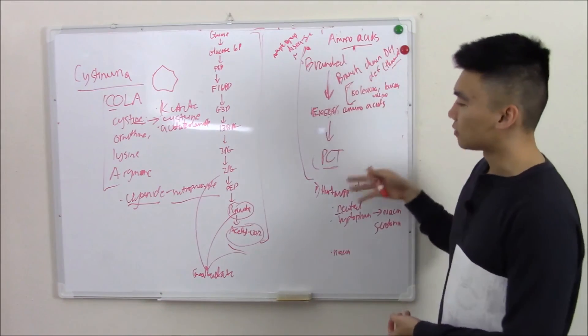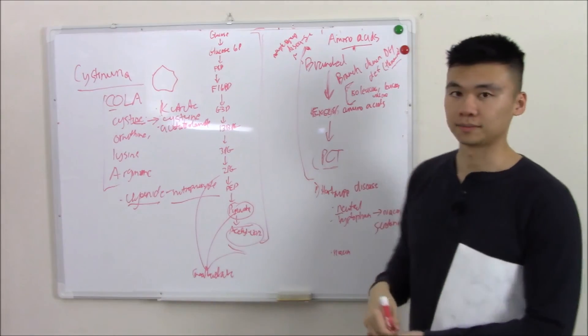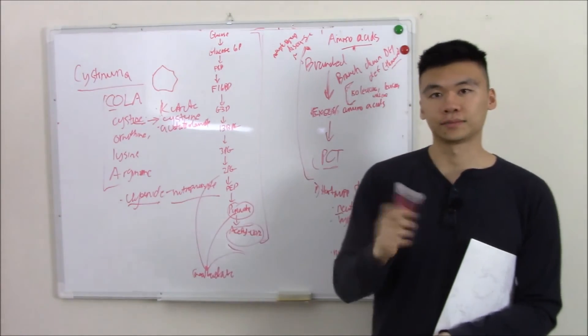So we talked about how amino acids fit into our glycolysis backbone. We talked about some ways where it can go wrong. That does it for this video. See you next time.